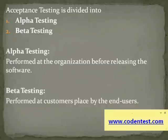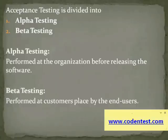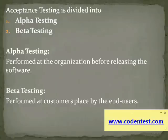Alpha testing is testing performed at the organization before releasing the software to the customer. It's usually done by subject experts like managers, team leaders, and delivery heads. Some changes might still be made in the software as a result of alpha testing. So acceptance testing performed at the organization is alpha testing.